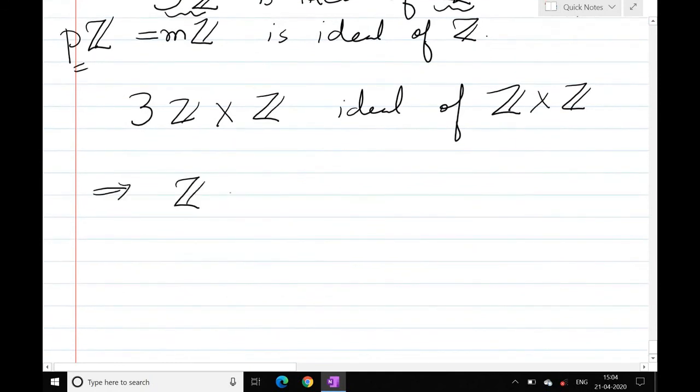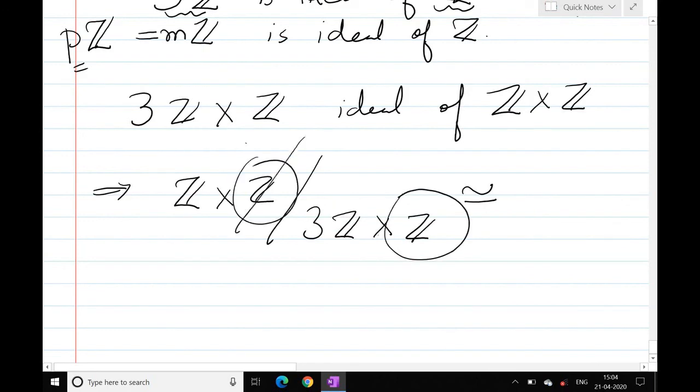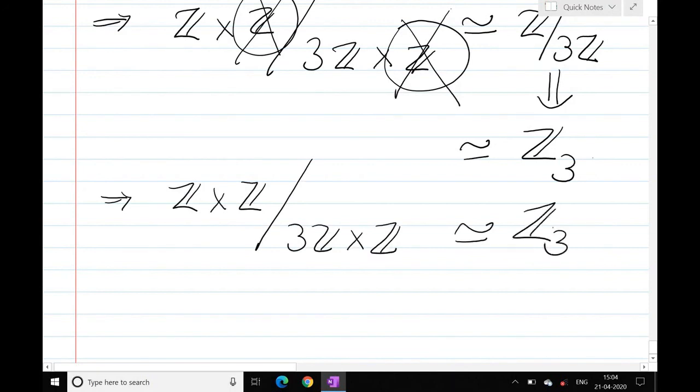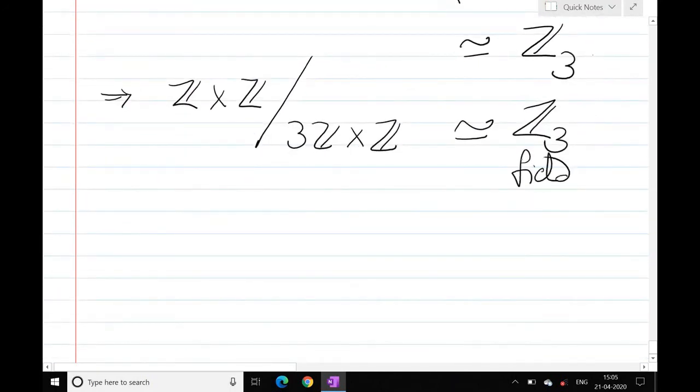Then we have Z cross Z quotient 3Z cross Z will be isomorphic to, if I look at Z by 3Z versus Z3. This means that Z cross Z quotient 3Z cross Z is isomorphic to Z3. Then we have Z3, which is a field. And then 3Z cross Z is maximal.